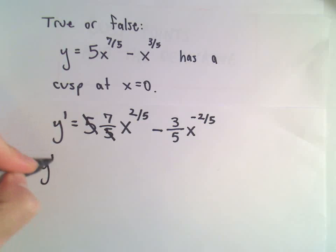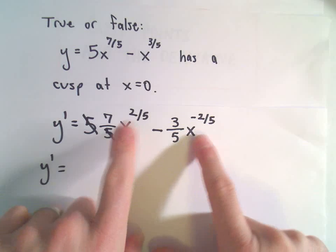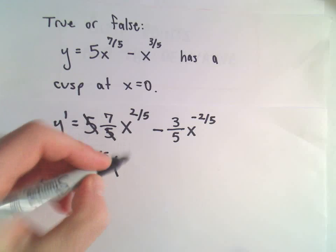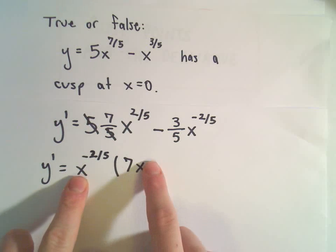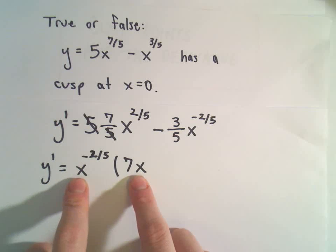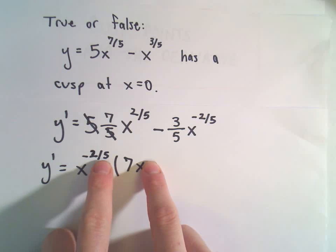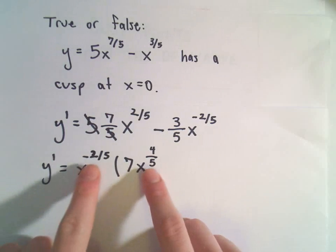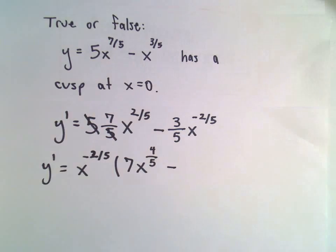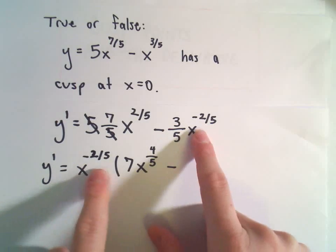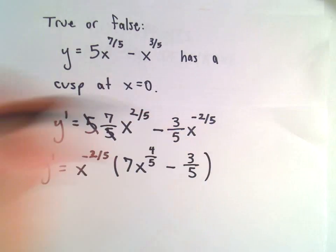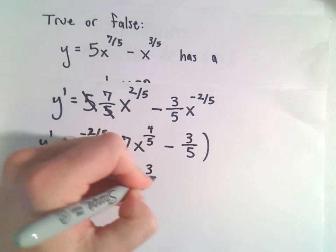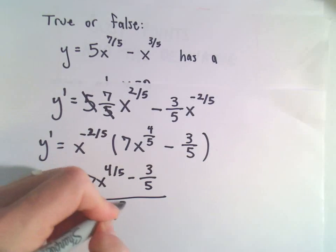We can cancel out our 5's. We've got x to the 2/5 and x to the negative 2/5. We can pull out the smaller exponent, which is x to the negative 2/5. That gives us 7 times x to the 4/5 — since negative 2/5 plus 4/5 equals 2/5 — minus 3/5. So we rewrite this as 7x to the 4/5 minus 3/5, all over x to the positive 2/5.